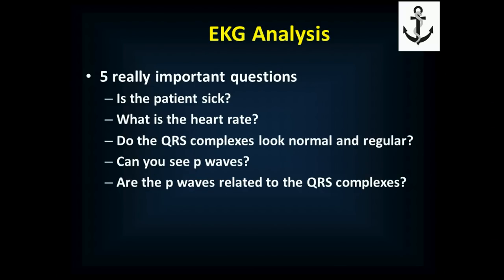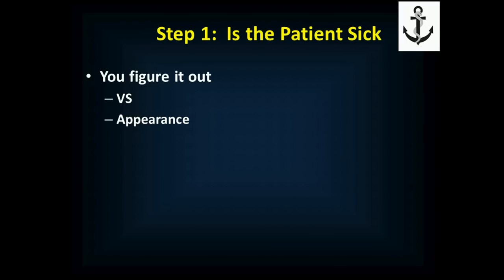When you look at an EKG, you need to answer five questions. First: is the patient sick? That's not from the EKG — it's from the patient. Second: what's the heart rate? Third: do the QRS complexes look normal and are they regular? Fourth: can you see P waves, and are they related to QRS complexes? Is the patient sick? Check vital signs, appearance, pallor, diaphoresis, red-flag findings. They're sick regardless of what the EKG says. A normal EKG doesn't mean they're not sick. An abnormal EKG may explain why they're sick. Analyze your rate: below 60 is bradycardia, above 100 is tachycardia — the ventricular rate is seen from the QRS complexes.